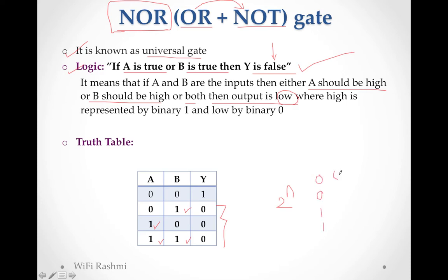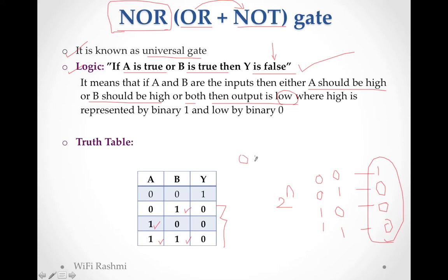The input combinations follow the pattern: 0 0, 0 1, 1 0, 1 1. If even one value is 1, output is false (0). So at 3 places you get 0, and only 0 0 gives 1. This is the opposite of OR gate - in OR you got the reverse. If you remember OR, you can easily write NOR: just replace 1 with 0 and 0 with 1. This is the truth table and logic of NOR gate.